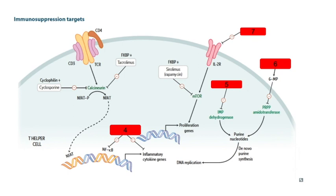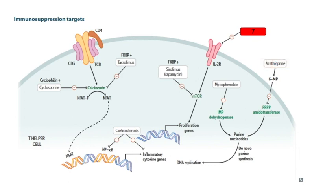Number four: what inhibits NF-kappa B and also inhibits the transcription of inflammatory cytokines? Steroids or glucocorticoids. Five: IMP dehydrogenase inhibitor — that is mycophenolate. How about our PRPP amidotransferase inhibitor through 6-MP? If you guessed azathioprine, you might have gotten it correctly.